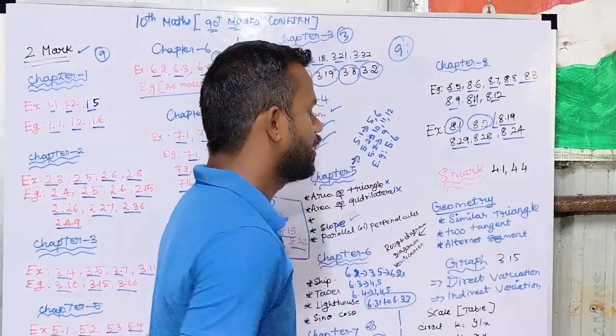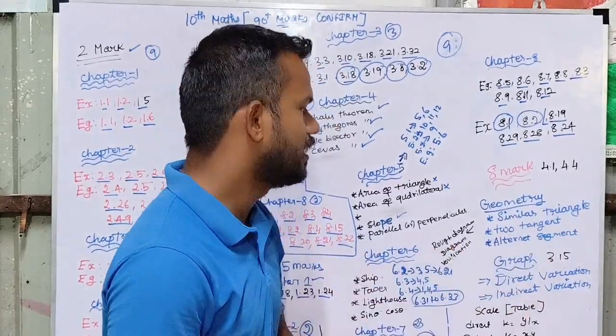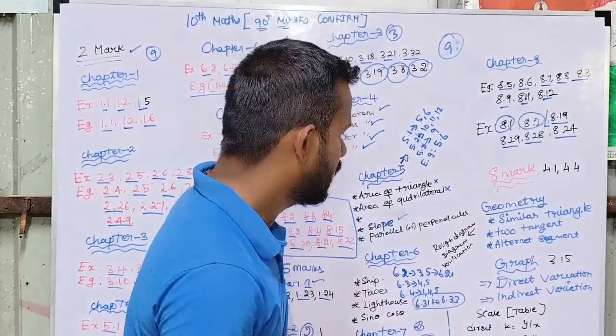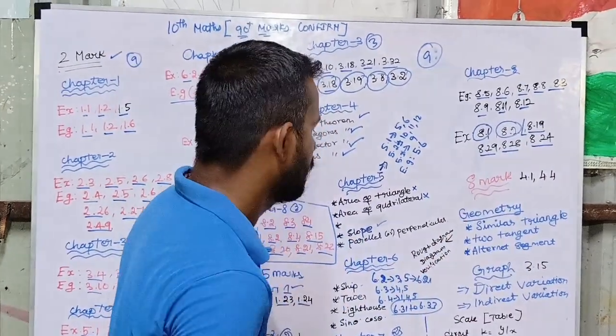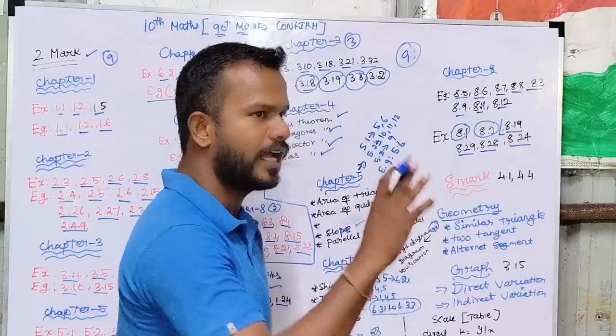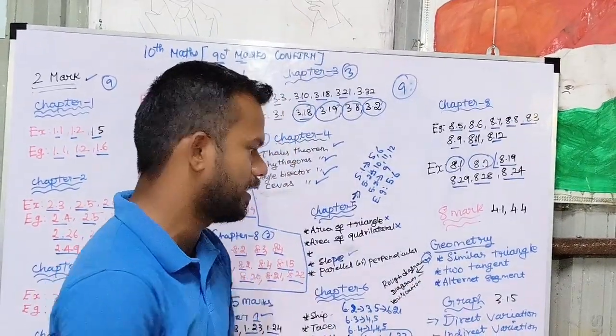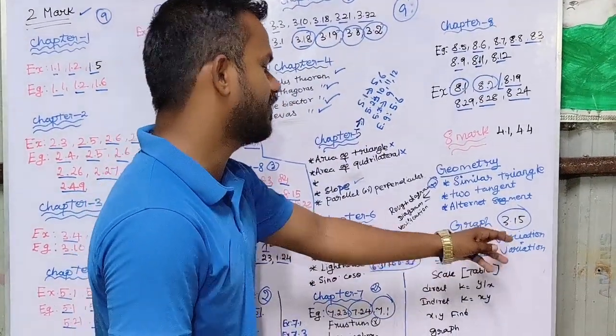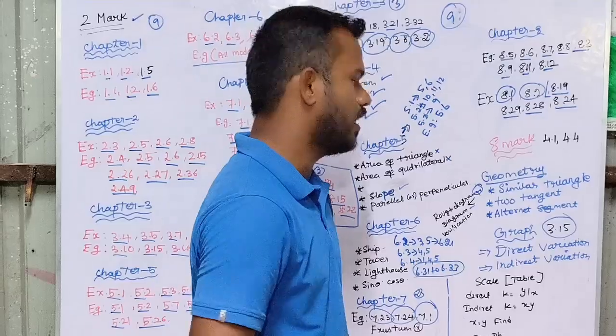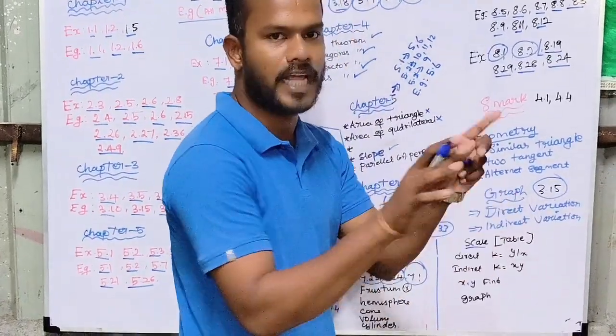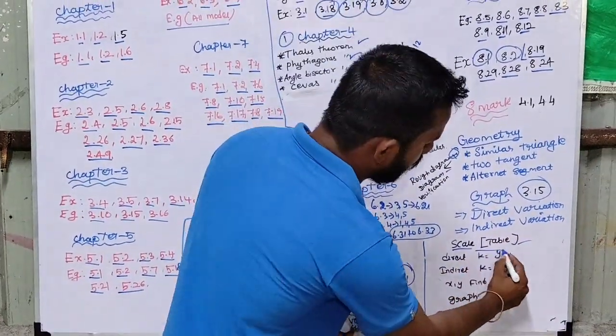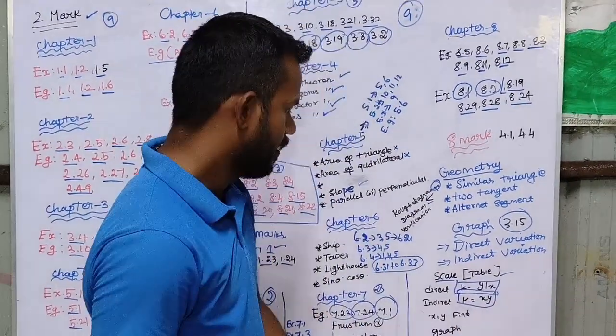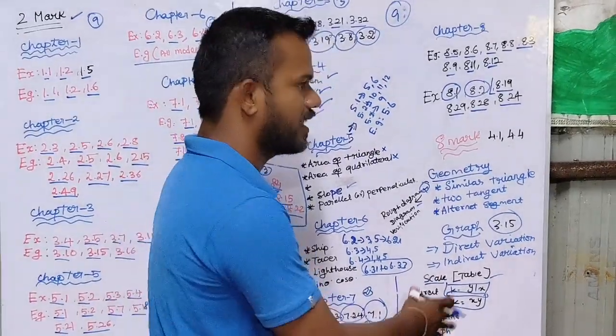Now the rough diagram is very important. The diagram is very important. Verification is very important. The graph is example 3.15. That is direct variation and indirect variation. The scale is very important. Tap and tap. The form is K equal to Y by X. The graph is very important.